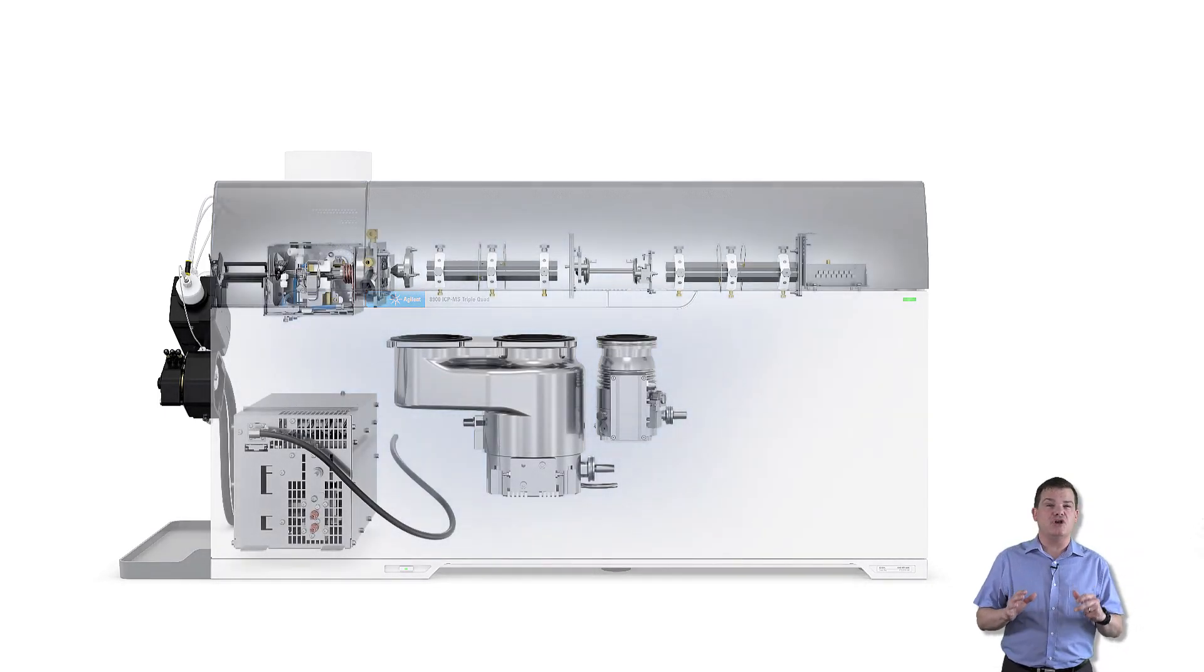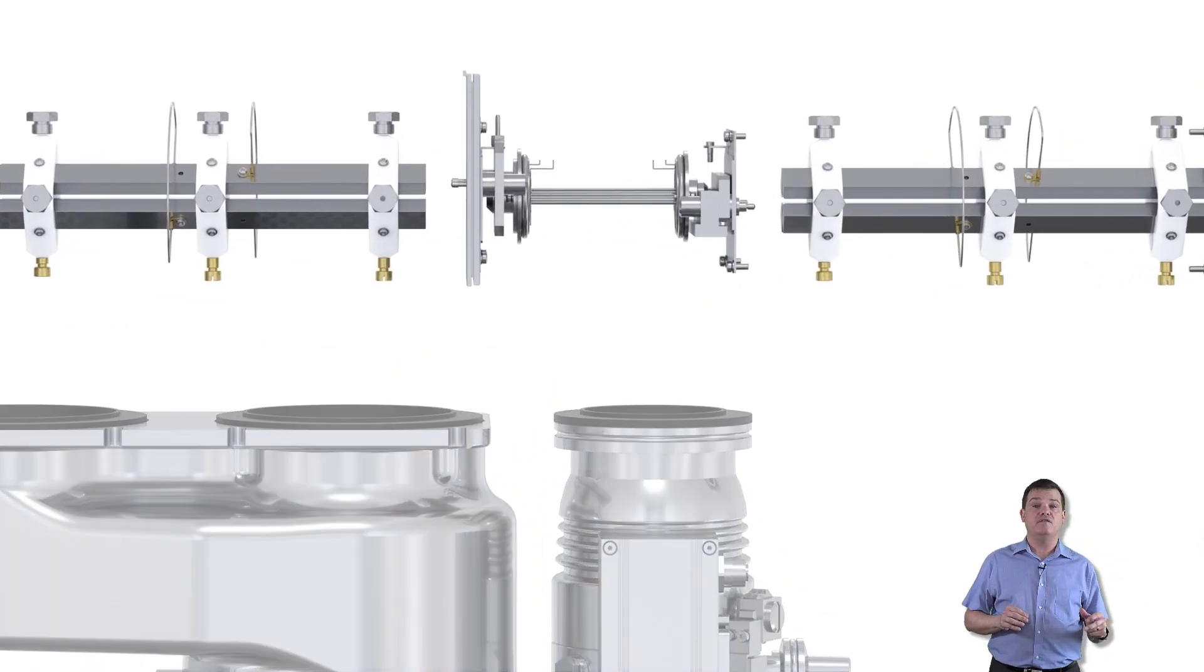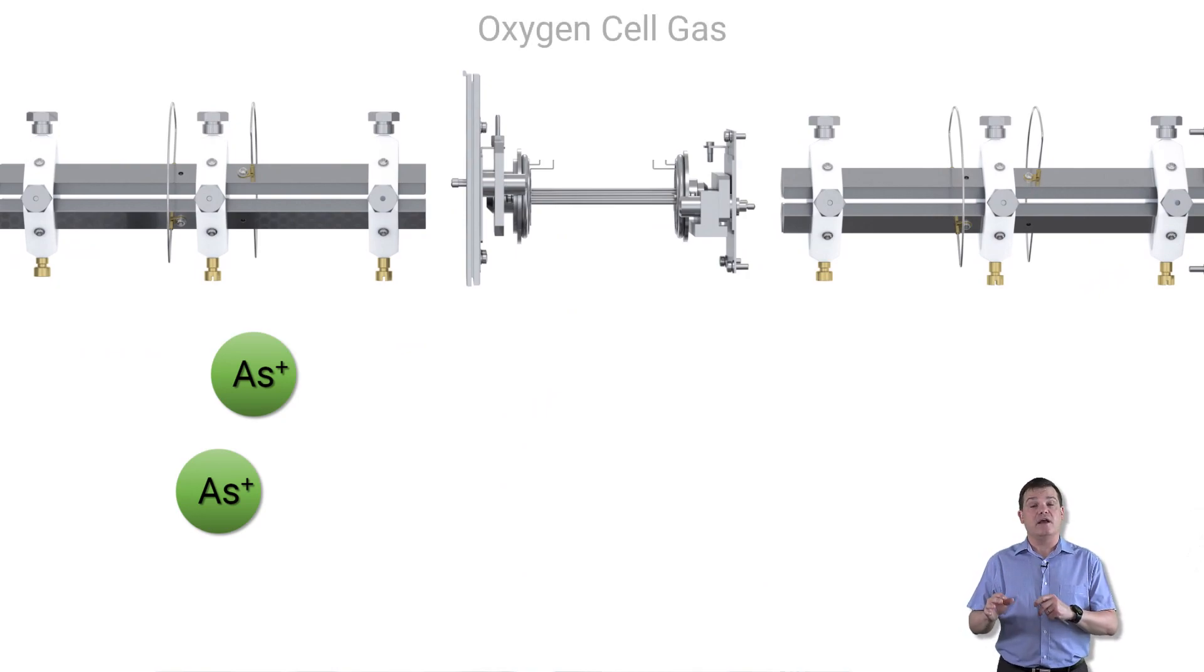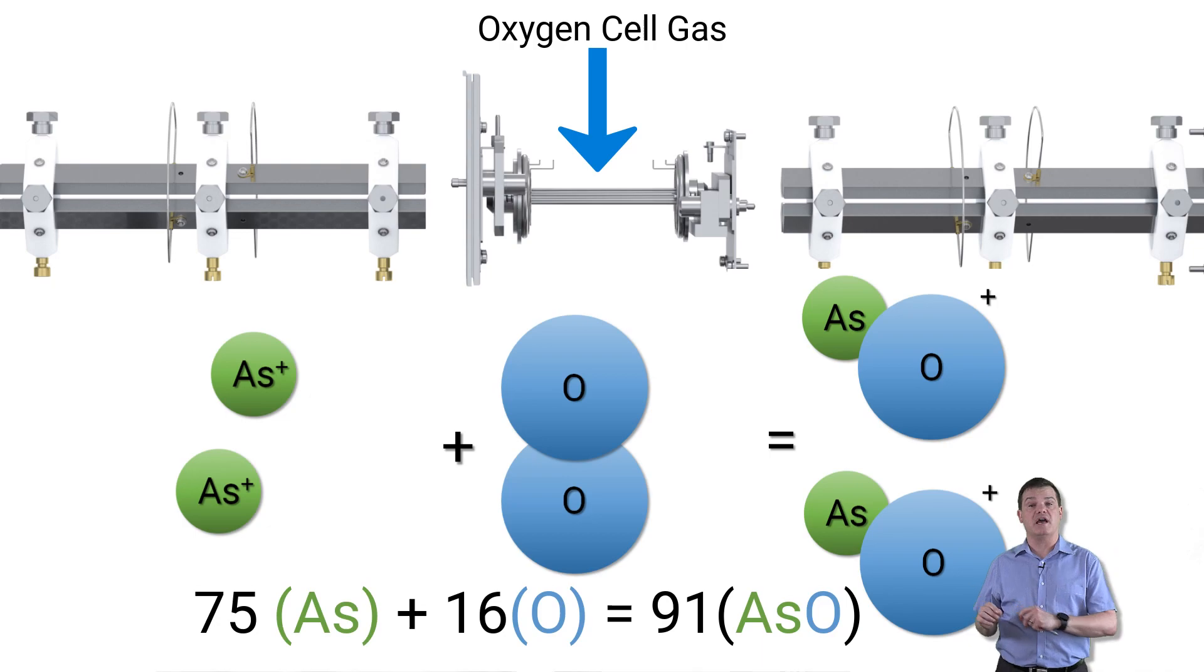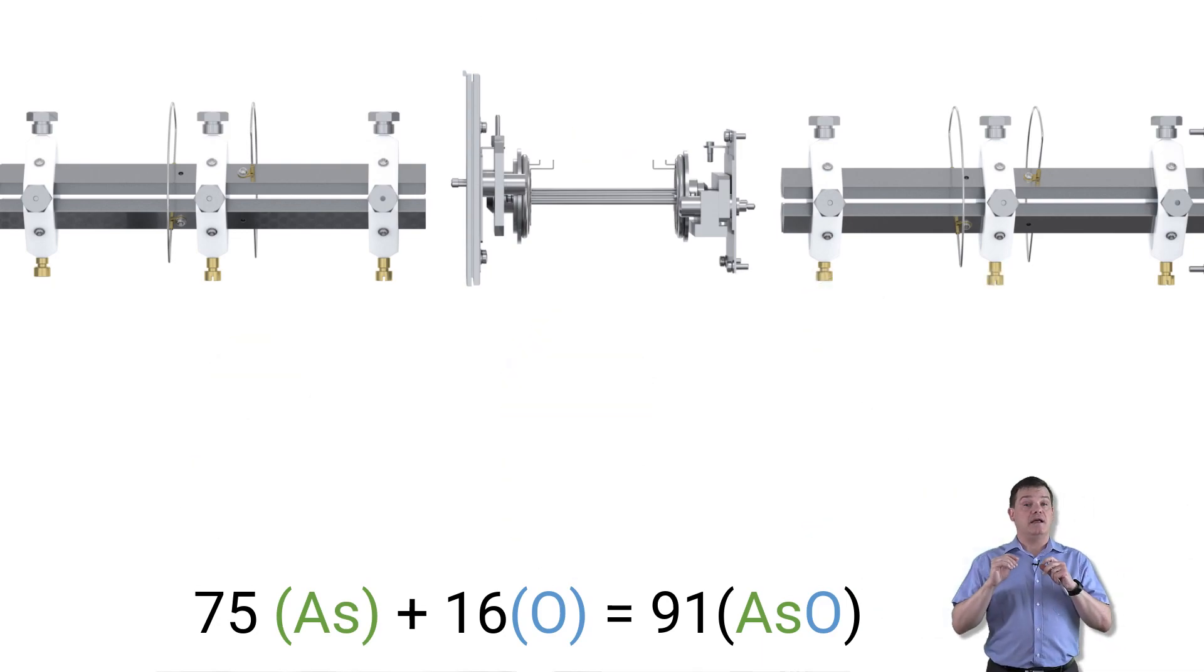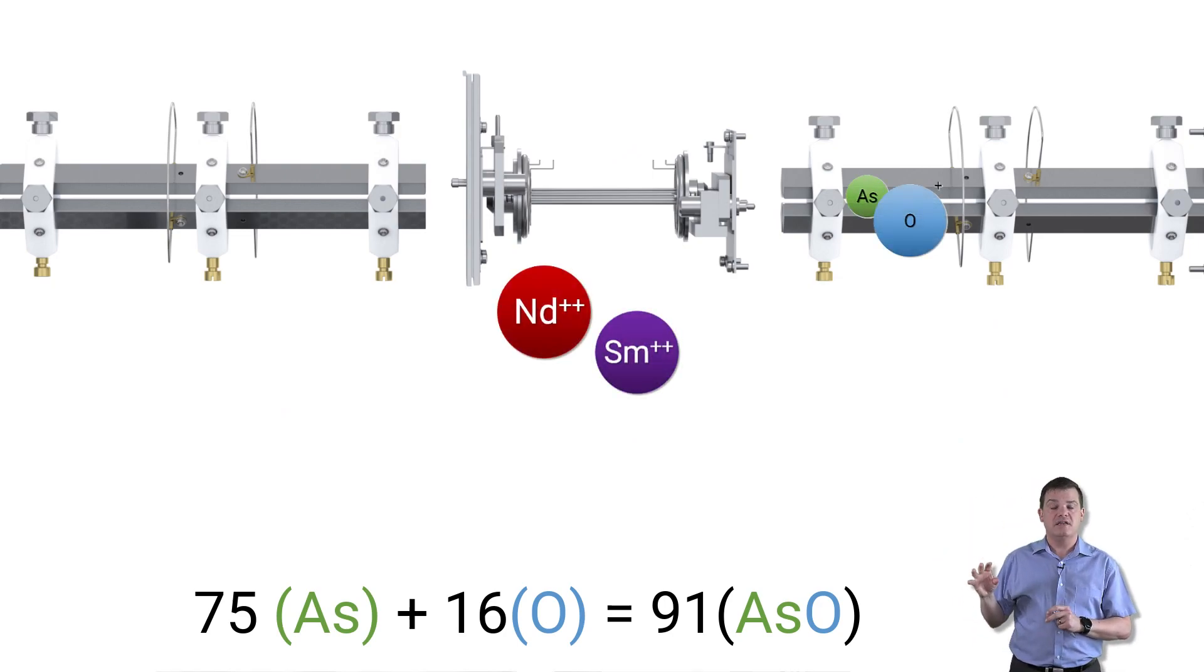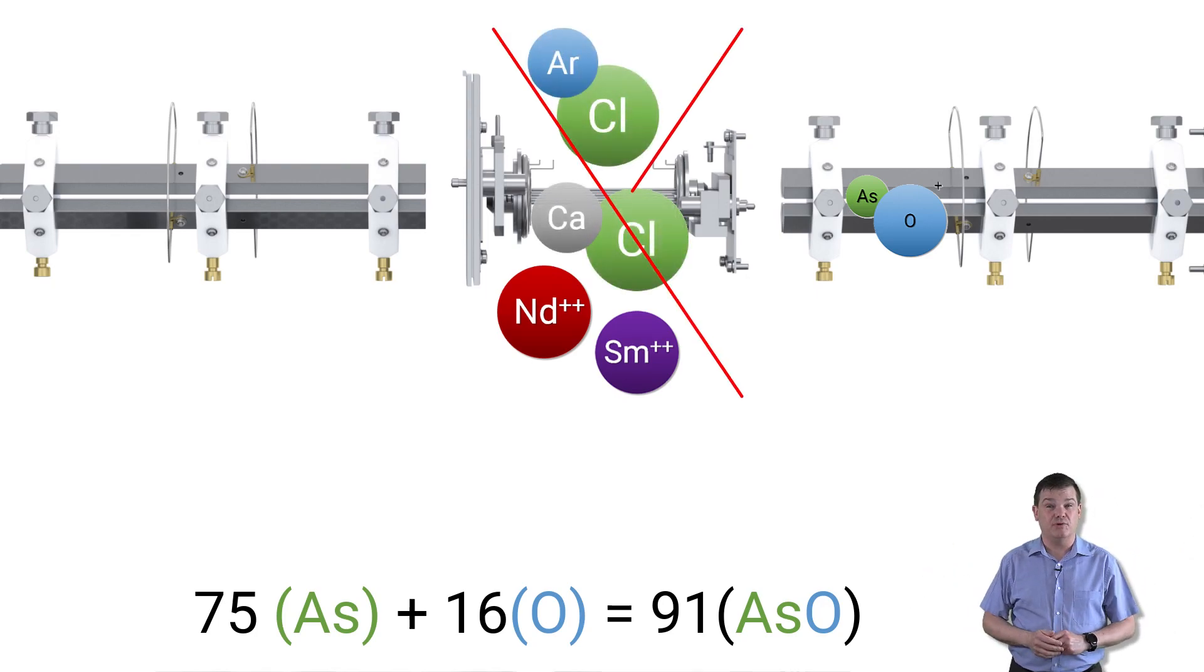ICP triple quad resolves the doubly charged ion overlaps on arsenic using oxygen cell gas to form arsenic oxide product ions in the cell. The beauty of this method is that it moves arsenic away from both the doubly charged ions and any polyatomic ion interferences such as argon chloride and calcium chloride. It's really that simple.